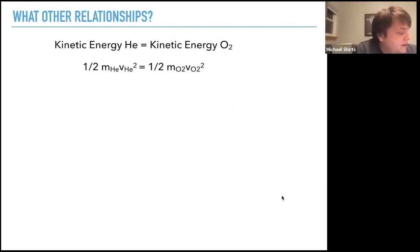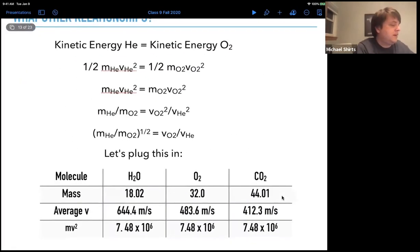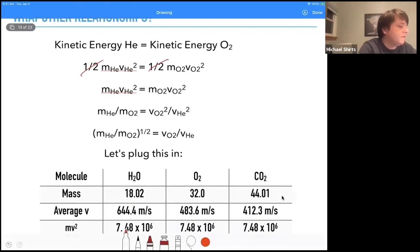We've got one-half mass of helium times the velocity of helium squared, one-half mass of oxygen times velocity of oxygen squared. So let's cancel out the one-halves. And now what we're going to do is rearrange it. We're going to get all the m's on the same side, so we'll divide by mass of oxygen. And we're going to get all the velocities on the same side, so we'll divide by the velocity of helium and we get this.